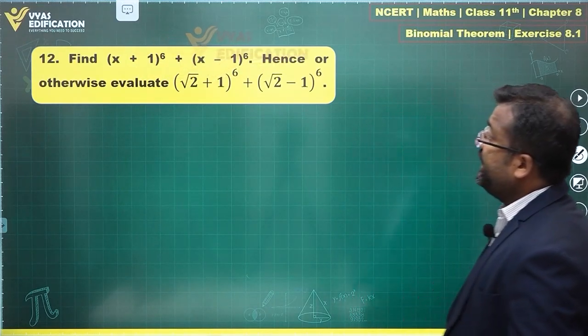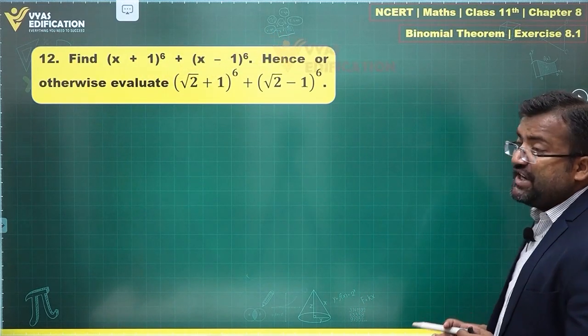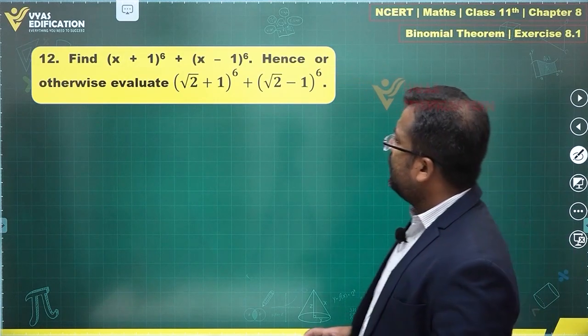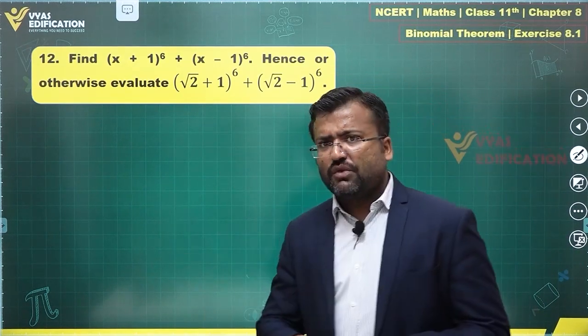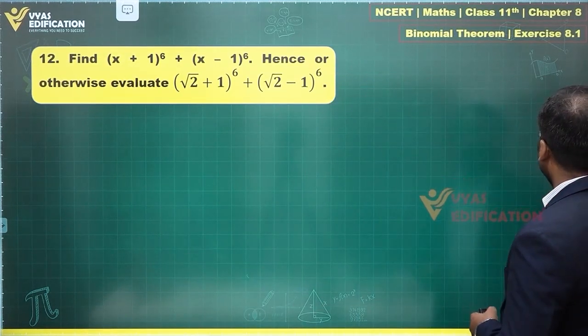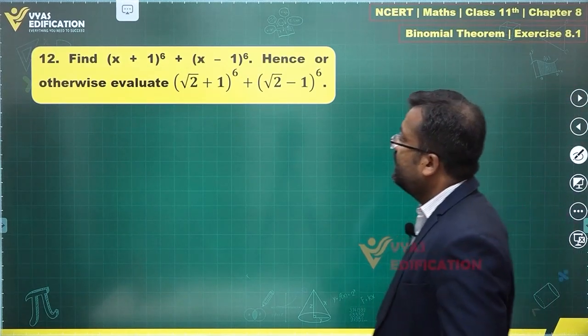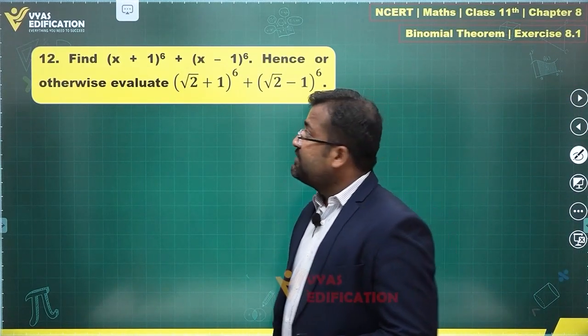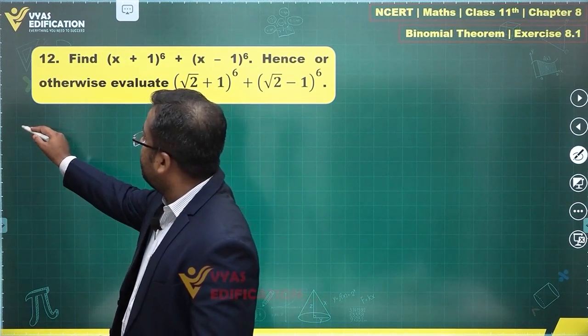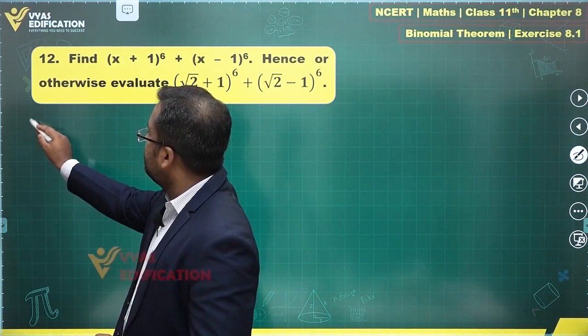Let's discuss this question next. Find (x+1)^6 + (x-1)^6. Hence otherwise evaluate (√2+1)^6 + (√2-1)^6. How do we go about doing that? Let's try to solve (x+1)^6 first.